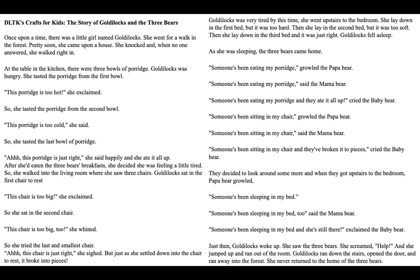At the table in the kitchen, there were three bowls of porridge. Goldilocks was hungry. She tasted the porridge from the first bowl. 'This porridge is too hot,' she exclaimed. So she tasted the porridge from the second bowl. 'This porridge is too cold,' she said. So she tasted the last bowl of porridge. 'This porridge is just right,' she said happily, and she ate it all up.